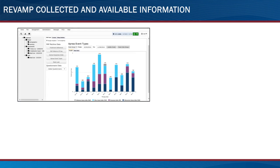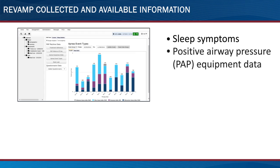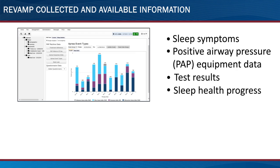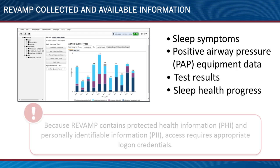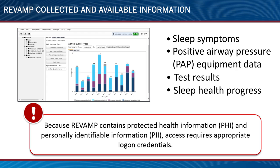REVAMP creates a profile based on the veteran's answers to an online questionnaire about their sleep symptoms. The information collected from the veteran on REVAMP can be accessed by the veteran and the provider. Information from the veteran's positive airway pressure, or PAP, machine is also transmitted wirelessly to REVAMP. Both the veteran and provider can log in any time to view test results, sleep health progress, and the use of their PAP. The information in REVAMP can also be exported to a progress note for entry into the patient's medical record. Because REVAMP contains Protected Health Information, or PHI, and Personally Identifiable Information, or PII, access requires appropriate log-on credentials.